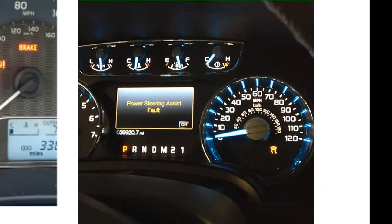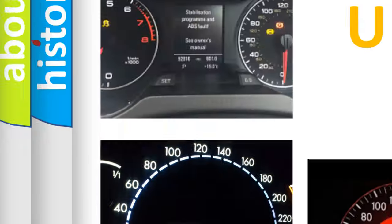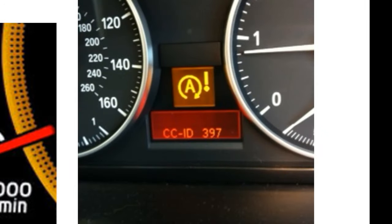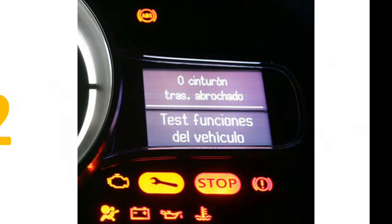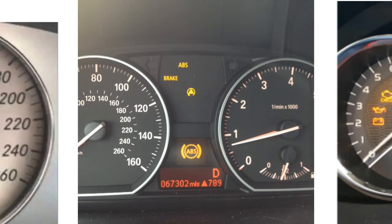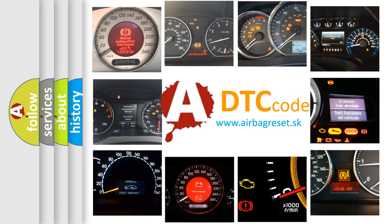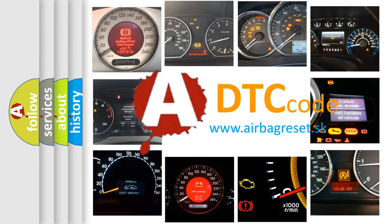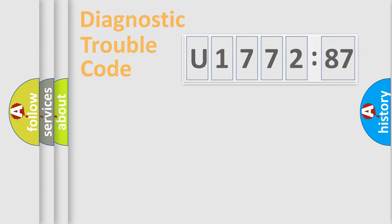Welcome to this video. Are you interested in why your vehicle diagnosis displays U177287? How is the error code interpreted by the vehicle? What does U177287 mean, or how to correct this fault? Today we will find answers to these questions together.